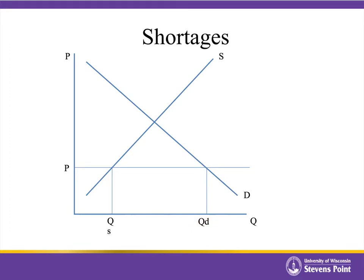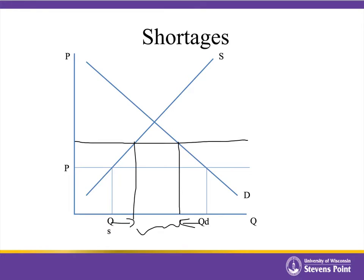With the shortage in place, that's going to put upward pressure on the price. As the price starts going up, we see that moving along the demand curve, quantity demanded is going down. But as the price goes up, quantity supplied is getting larger, and the resulting shortage is getting smaller. This continues until the price gets pushed up to the point where the shortage is completely eliminated.